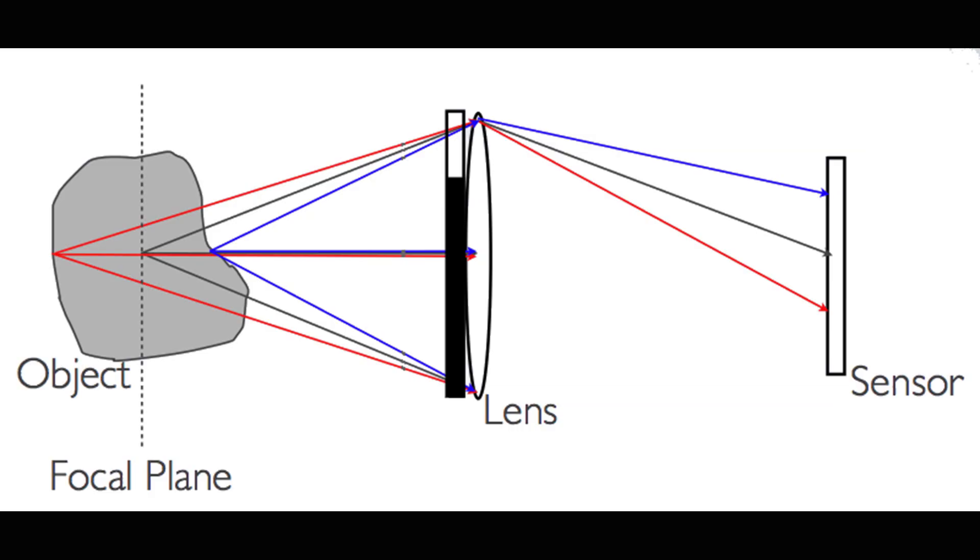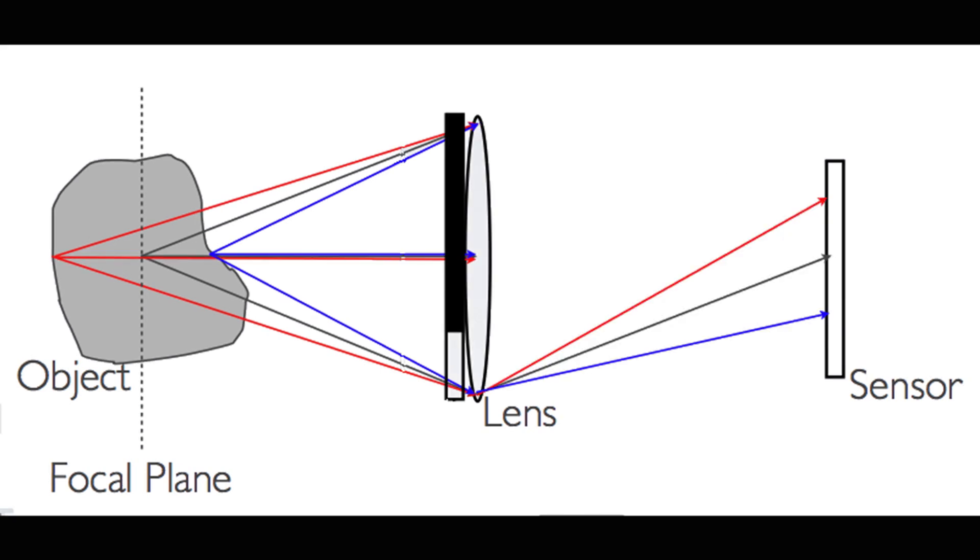For example, by blocking light from all but the top portion of our lens, we observe a blue ray arriving above a gray one, which in turn arrives above a red one. If we then admit light only from the bottom of the lens, we observe the opposite ordering, and that the gray ray hasn't moved.